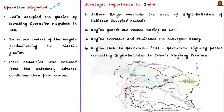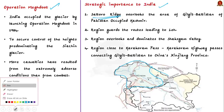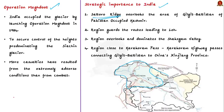Siachen conflict is said to have surpassed all other India-Pakistan conflicts in its duration. To summarize, the region is strategically important for India. First, mainly because the Saltoro Ridge overlooks the area of Gilgit-Baltistan of Pakistan-occupied Kashmir, which is under dispute with Pakistan. Secondly, the region guards the routes leading to Leh, which is an important district of the Union Territory of Ladakh.